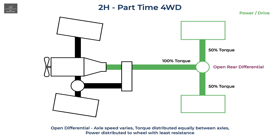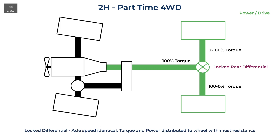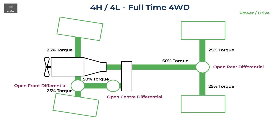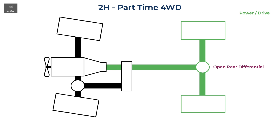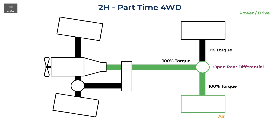Hi there and welcome back to another NJS instructional video. In this video I'm going to clarify the torque and power split in open and locked differentials for both part-time and full-time four-wheel drive vehicles. In a previous video on how four-wheel drive systems work, I incorrectly mentioned that torque is distributed in an open differential based on wheel resistance or slip — for example, that torque is split 50/50 in an ideal situation, but if a wheel is in the air then 100 percent torque is sent to that wheel and zero percent to the other. However, this is actually not correct.